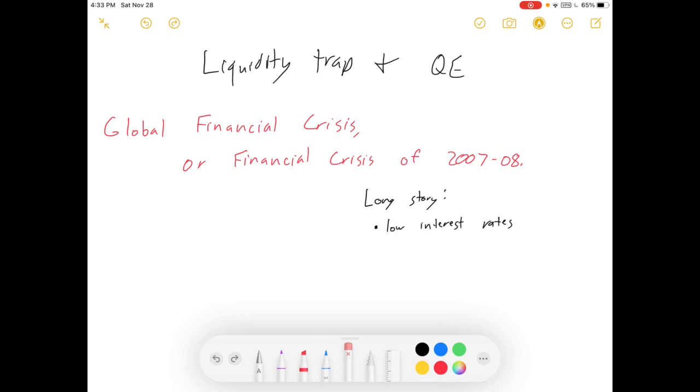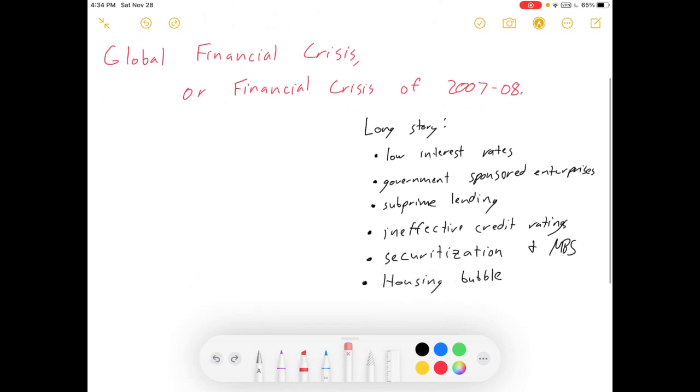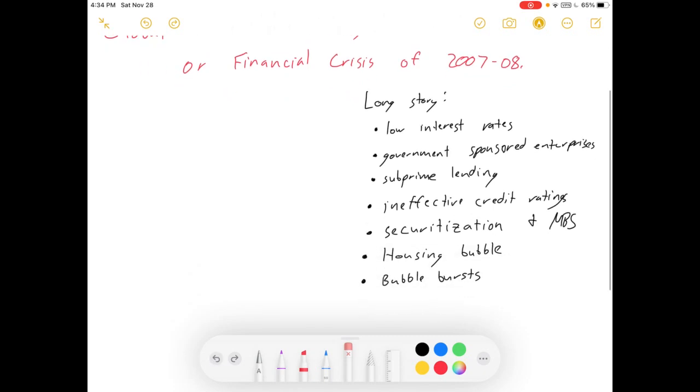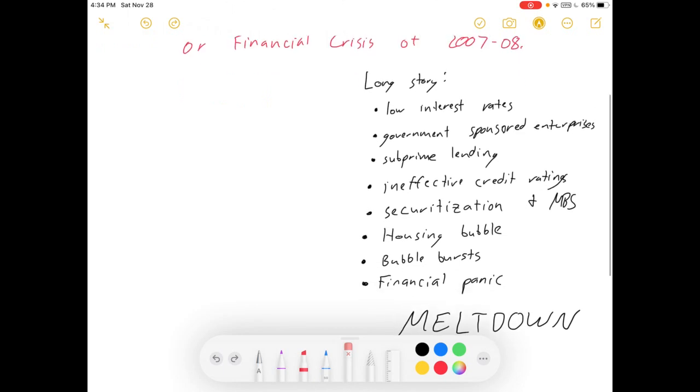But first, let me just remind you the story involves low interest rates from the Fed, government-sponsored enterprises like Fannie and Freddie, subprime lending, ineffective credit ratings, securitizations and mortgage-backed securities, a housing bubble, a bubble bursting, financial panic, meltdown.